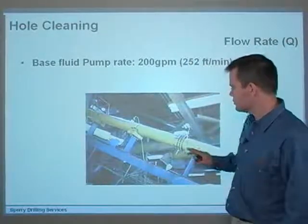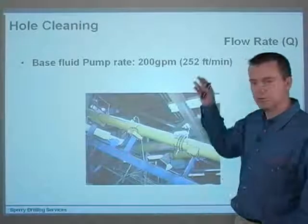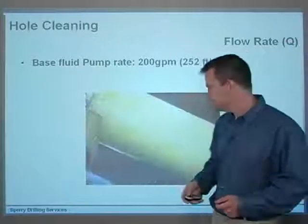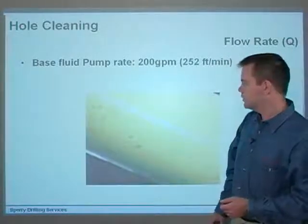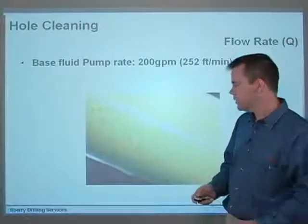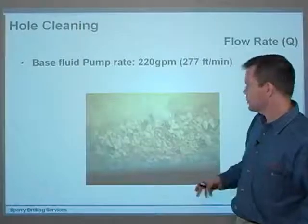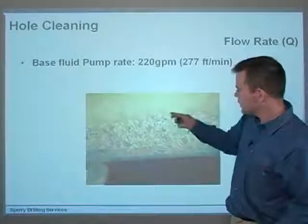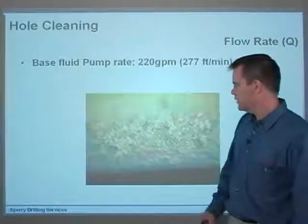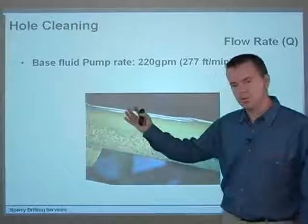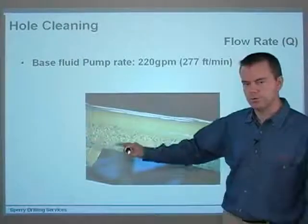We've got a flow tube that can be raised or lowered to different angles, set at 65 degrees. At 200 gallons per minute — equating to 252 feet per minute annular velocity — looking at the cuttings, we've basically got a thick bed on the bottom of the wellbore that isn't being cleaned out effectively at all. Increasing flow rate to 220 gallons per minute (277 feet per minute), we're getting a lot of cuttings moving across the top of the bed, but still not effectively cleaning it out. It's still relatively thick and would give a lot of torque and drag.